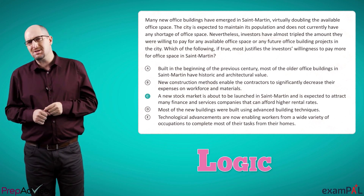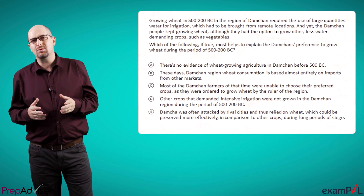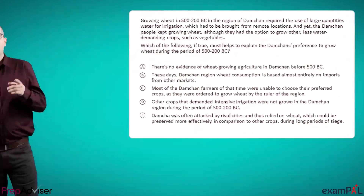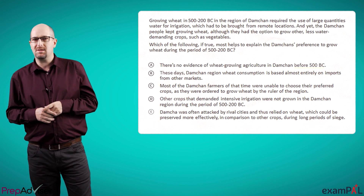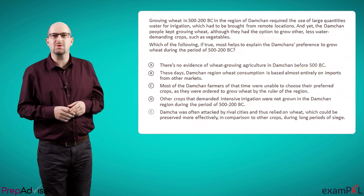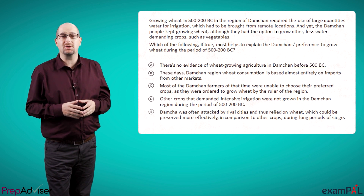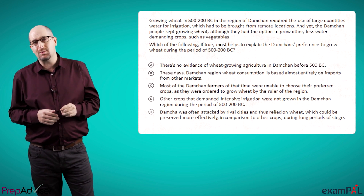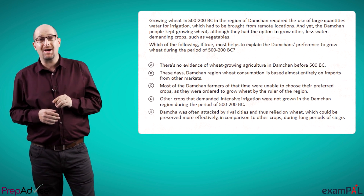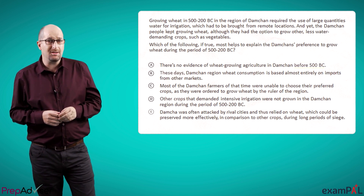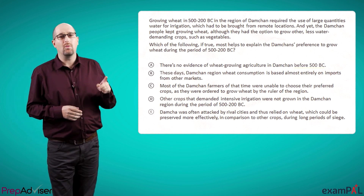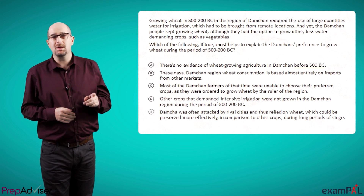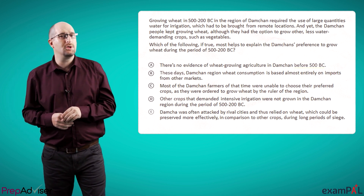Sometimes, though, the question doesn't give us enough to go on, and we'll simply have to, as a matter of last resort, look at the answers. Growing wheat in 500 to 200 BC in the region of Damchan required the use of large quantities of water for irrigation, which had to be brought from remote locations. And yet, the Damchan people kept growing wheat, although they had the option to grow other, less water-demanding crops such as vegetables. Which of the following, if true, most helps to explain the Damchan's preference to grow wheat during the period of 500 to 200 BC?